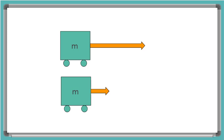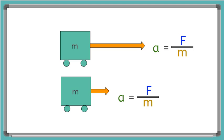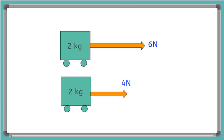If I have two carts with the same mass and I pull one cart with a big force and one with a small force, what do you think will be different about their accelerations? We can use the expression a equals F over M to think this through. If the mass is the same for both carts but one has a big force and the other a small force, we expect the cart with the larger force to have a larger acceleration.